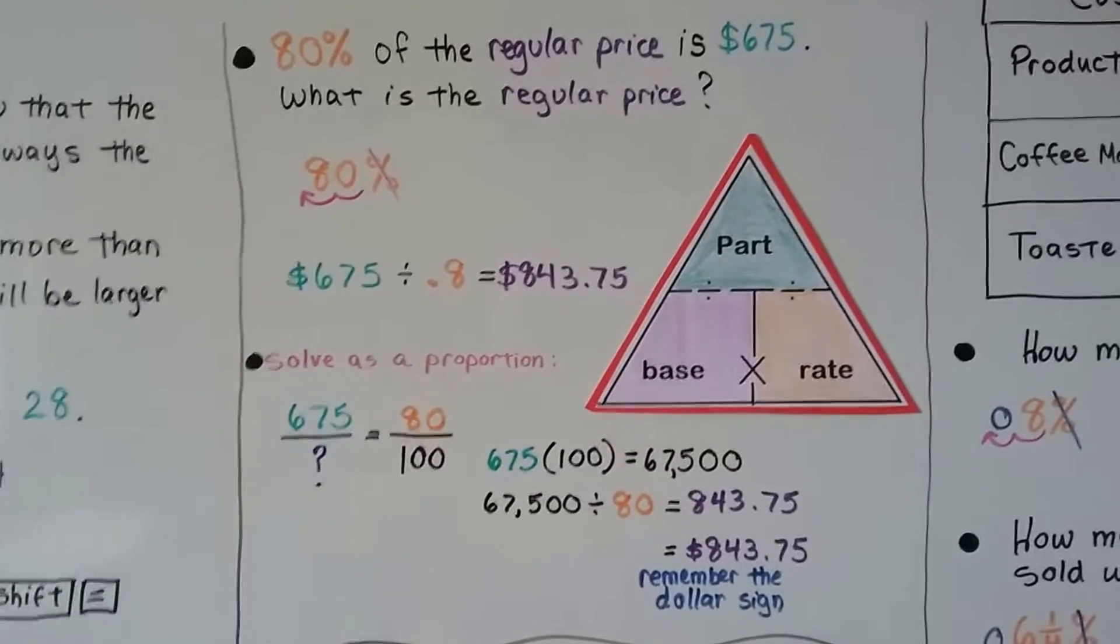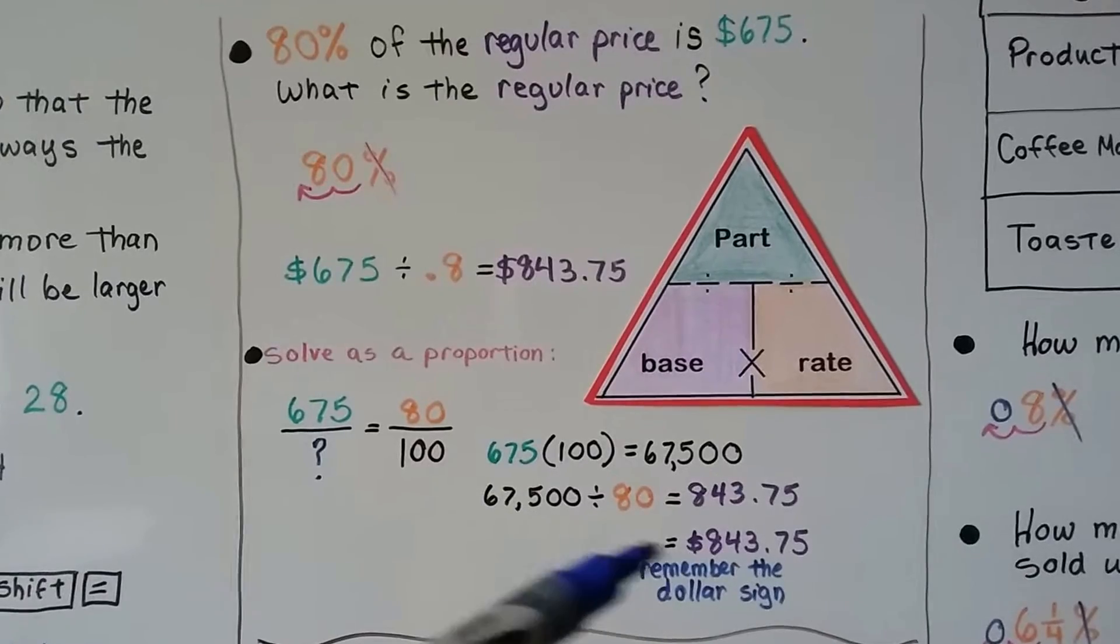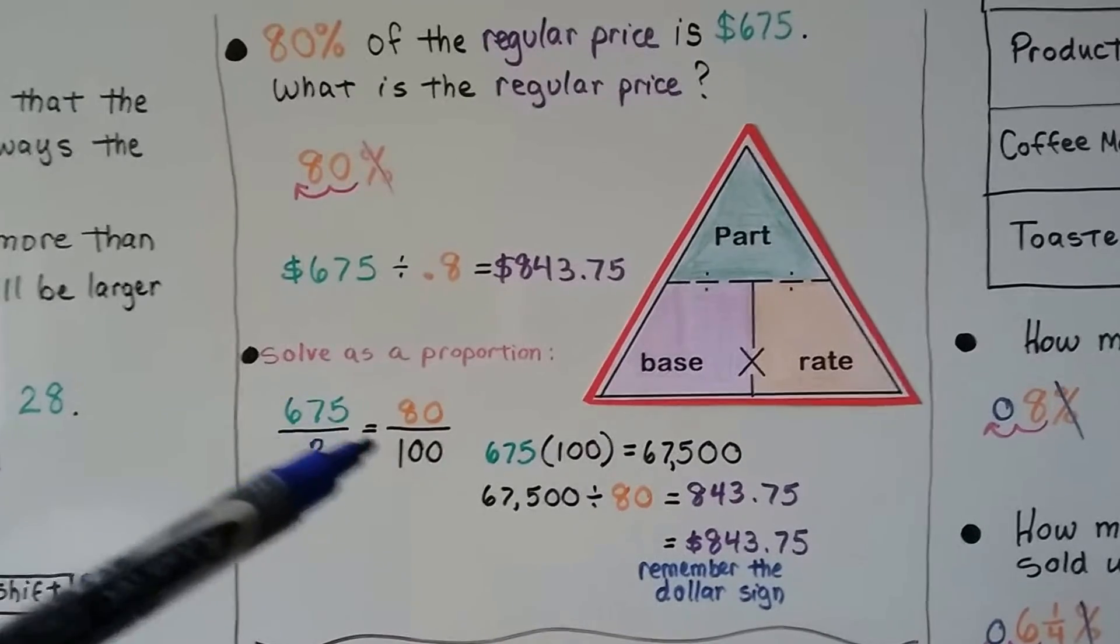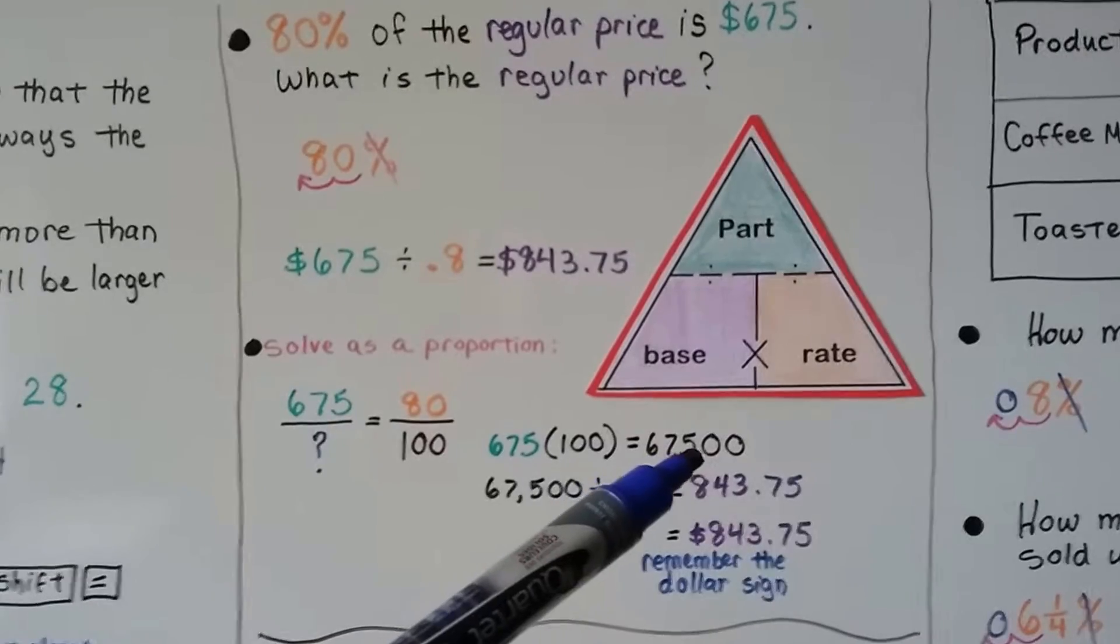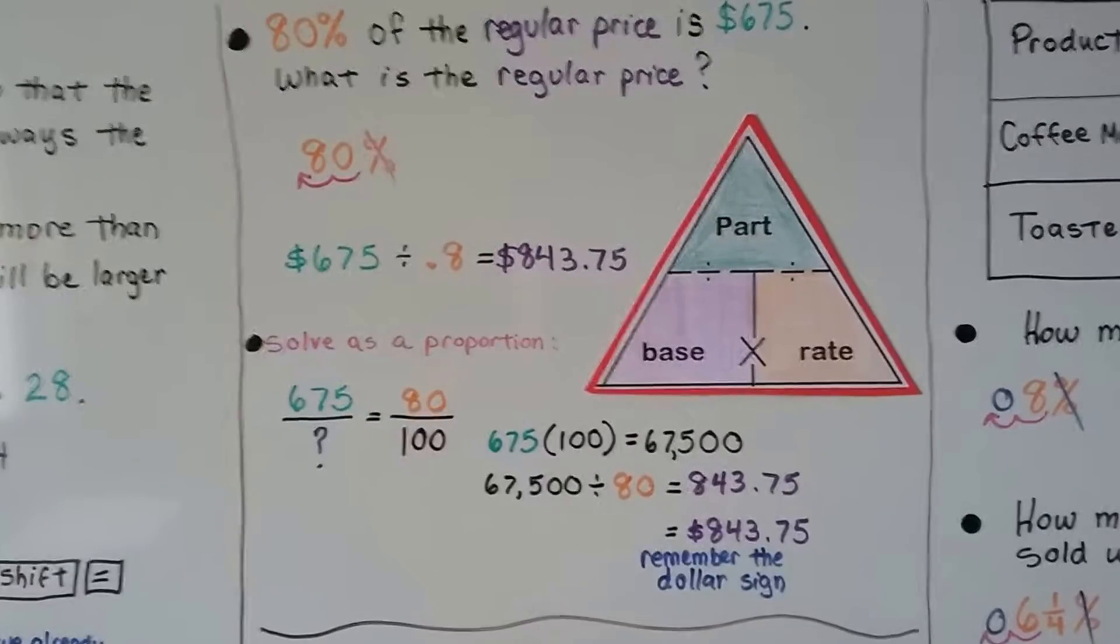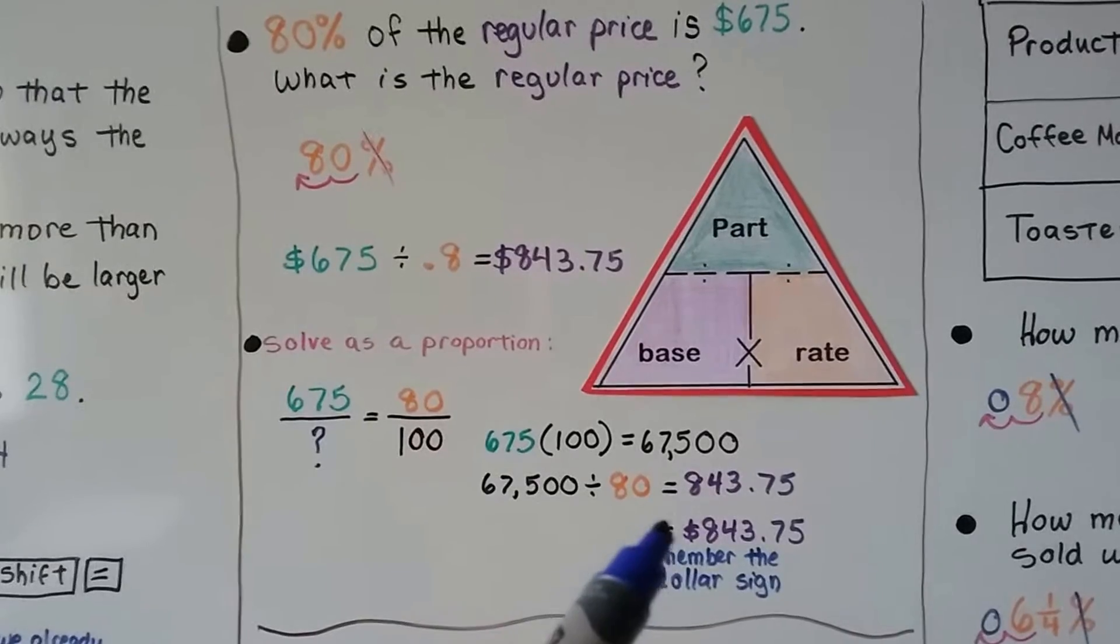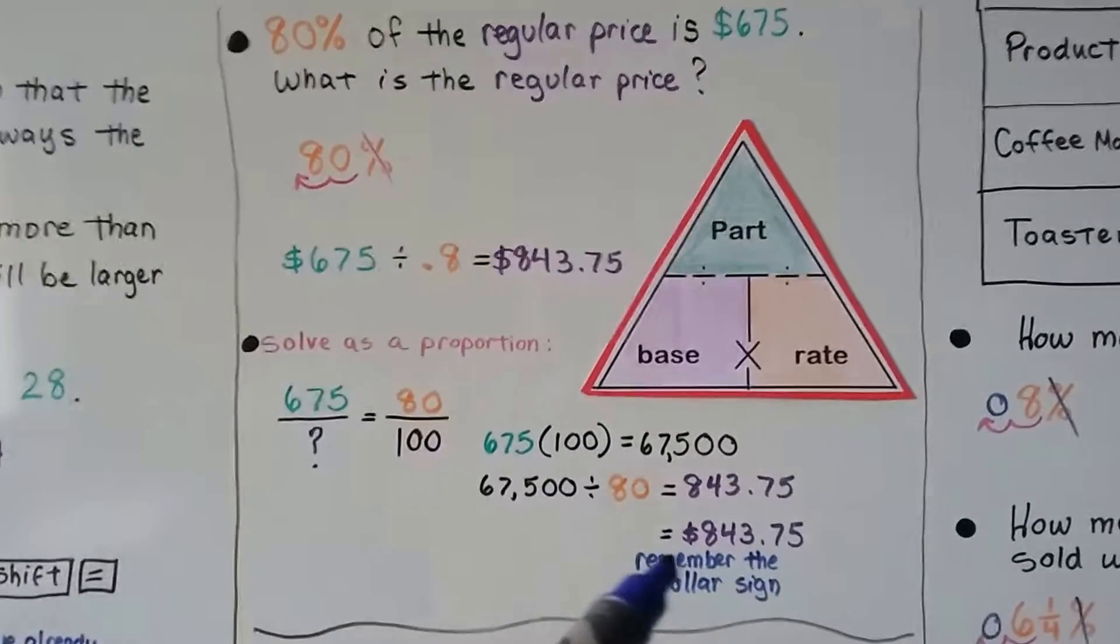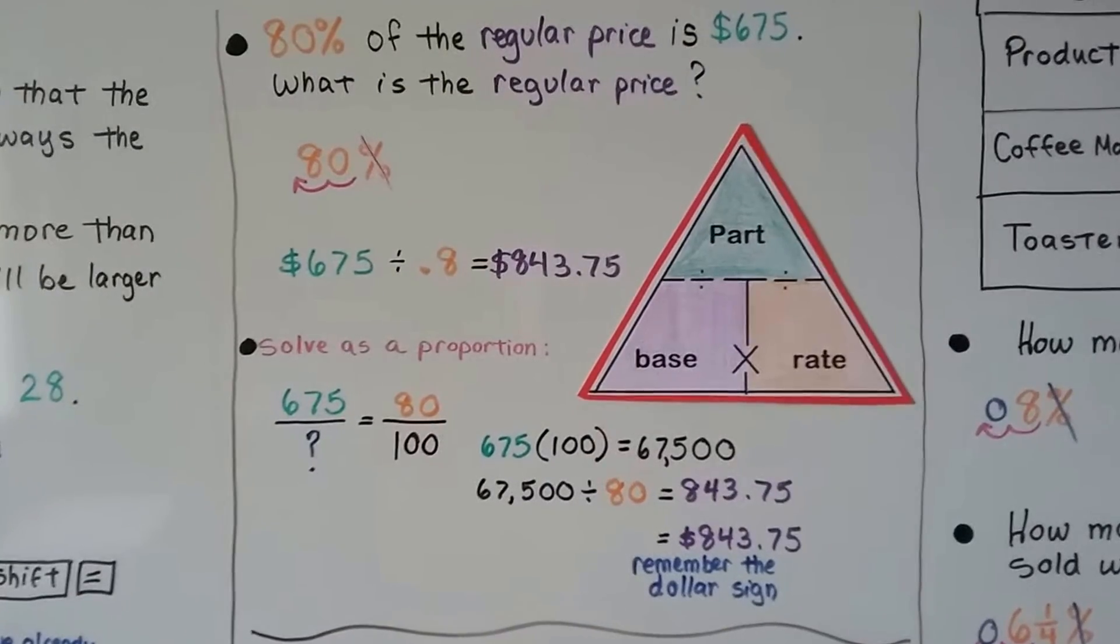As a proportion, we don't need the dollar signs until the end. We could do 675 times 100, which is 67,500. We divide it by the 80 and get 843.75. But we have to remember that this is talking about prices. We have to remember that dollar sign.